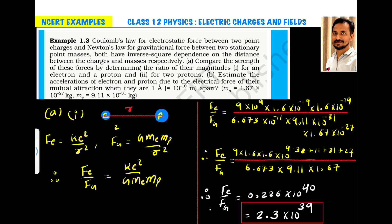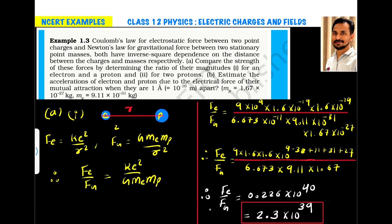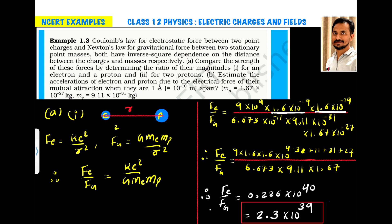Now we will substitute the values of the different constants. The value of Coulomb's constant K is 9 × 10⁹. The value of electronic charge e is 1.6 × 10⁻¹⁹, so e² = (1.6 × 10⁻¹⁹) × (1.6 × 10⁻¹⁹).